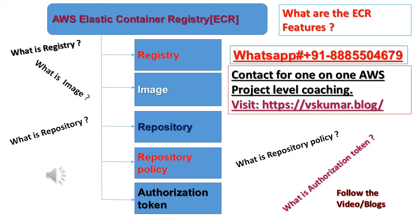4. Amazon ECR supports private container image repositories with resource-based permissions using AWS IAM. 5. This is so that specified users or Amazon EC2 instances can access your container repositories and images. 6. You can use your preferred CLI to push, pull, and manage Docker images, Open Container Initiative (OCI) Images, and OCI-compatible Artifacts.